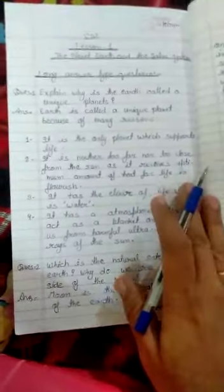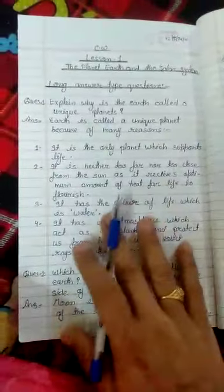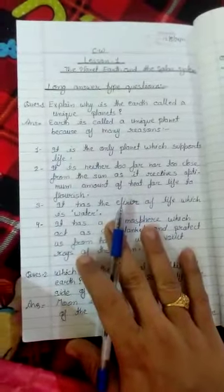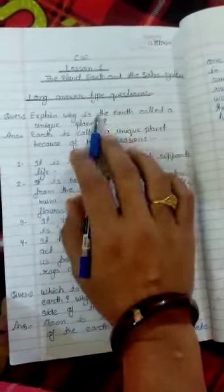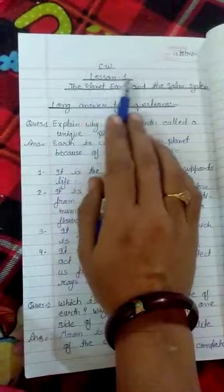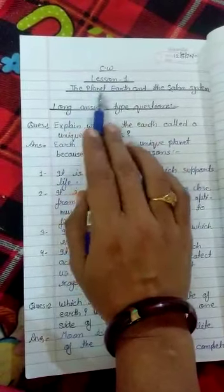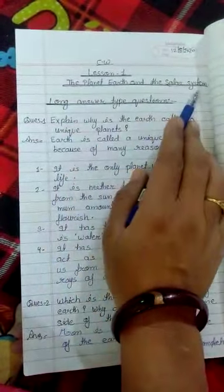In our previous classes we have done very short and short answer type questions, and today we continue with long answer type questions. First of all you mention date, then classwork, then lesson 1 and chapter name: the planet, earth and the solar system.